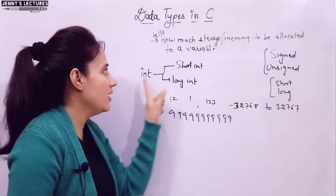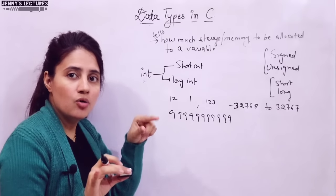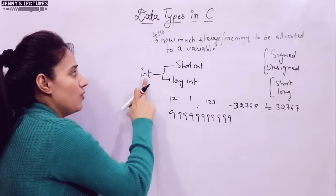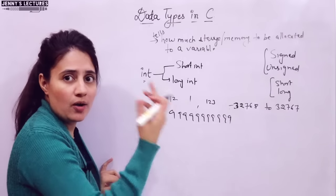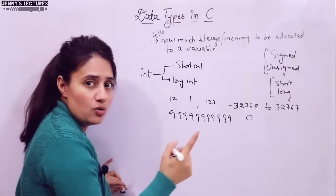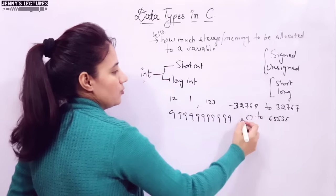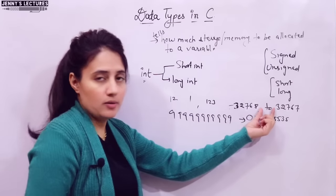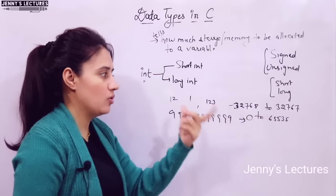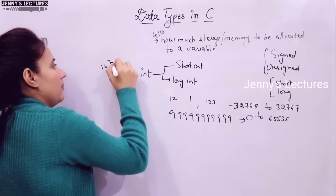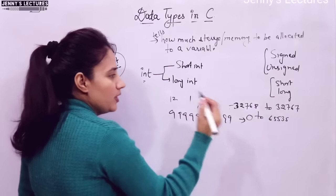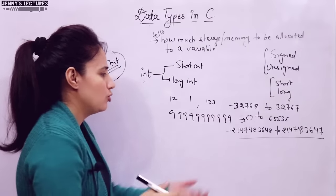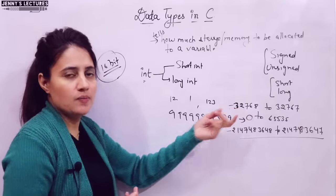For an unsigned integer, no negative value can be there, so it starts from 0. For a 16-bit machine, the range of signed integer is -32768 to +32767, and for unsigned integer it is 0 to 65535. On a 32-bit machine, the range is different. You don't have to remember the 32-bit range — just remember these. Generally in colleges they ask the integer size as two bytes, but it depends on the machine.